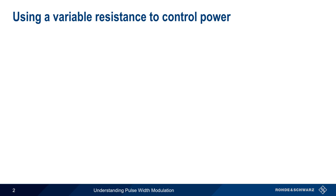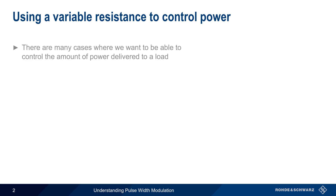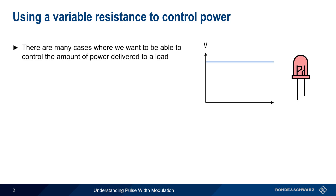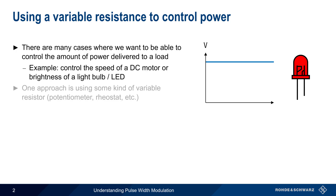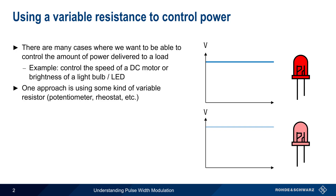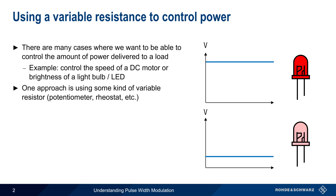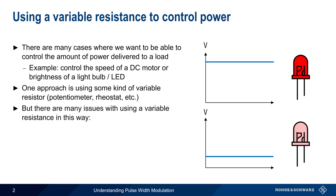Let's start by talking about a common task: controlling the amount of power delivered to a load. This is useful in many cases — for example, if we want to control the speed of a DC motor, change the brightness of an LED, etc. One approach is to use a potentiometer, or other type of variable resistance, to reduce the voltage at the load. But there are numerous issues when using a variable resistance in this way.